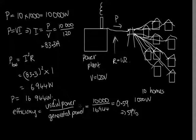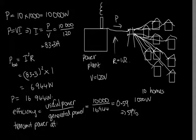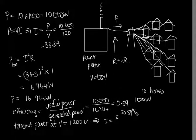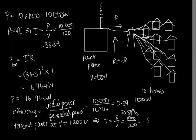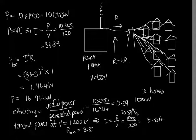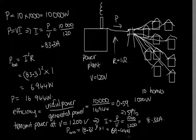Let's transmit power at 10 times that voltage: 1,200 volts. In that case, the current I = P/V = 10,000 over 1,200 = 8.33 amps. The power loss is 8.33² × 1 = 69.44 watts — 100 times smaller than before. We've increased the efficiency enormously by increasing the voltage by a factor of 10. This is why we want to use a transformer to increase the voltage: it allows us to lose a lot less electricity as we transport the power.